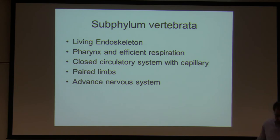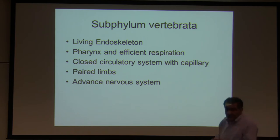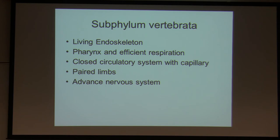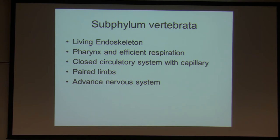Phylum Vertebrata — the vertebrate animals. We are talking about a living endoskeleton. Our endoskeleton is living — it has cells: osteocytes, osteoclasts, osteoblasts, and so forth. There are blood vessels in bone — it is a vascularized structure. Key features include an efficient pharynx and respiration, a closed circulatory system with capillaries, paired limbs, and an advanced nervous system. In the case of humans, of course, we can think and analyze.